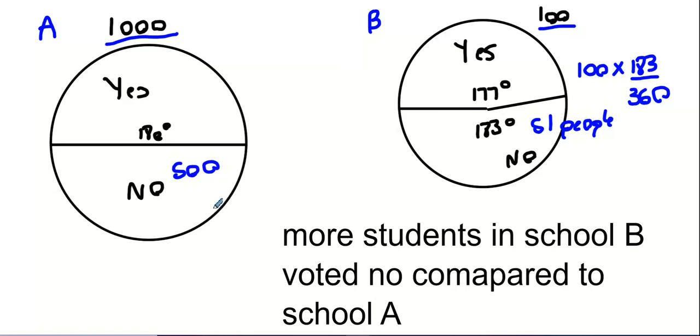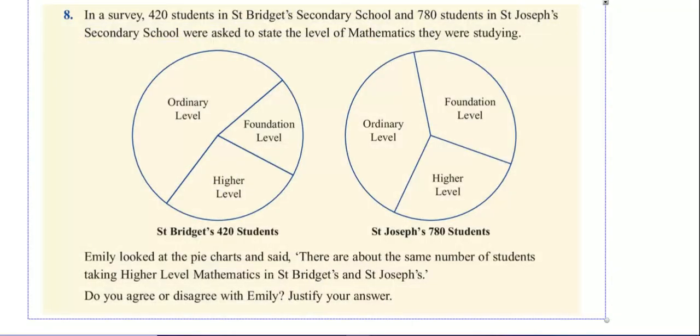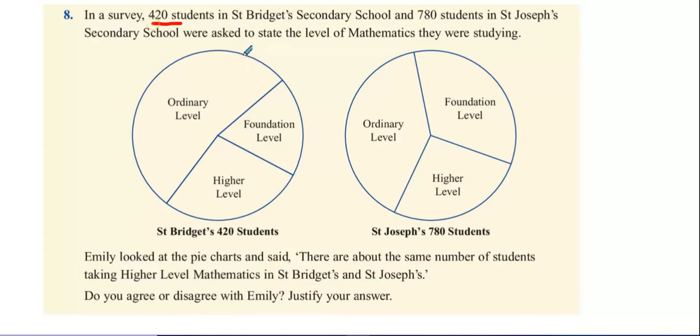However, if I changed it and I said a greater percentage of school B voted no compared to school A, is that true or false? True. But did more people vote no in school B? No. So you've got to remember, the overall circle represents a certain amount of people. You've got to be aware of that. So let's look at the following question now. 420 students in school St. Bridget's. 780 in St. Joseph's. Emily looked at the pie charts and said, there are about the same number of students taking higher level maths in St. Bridget's as there is in St. Joseph's. You can say roughly the same percentage, but not the same amount of students.